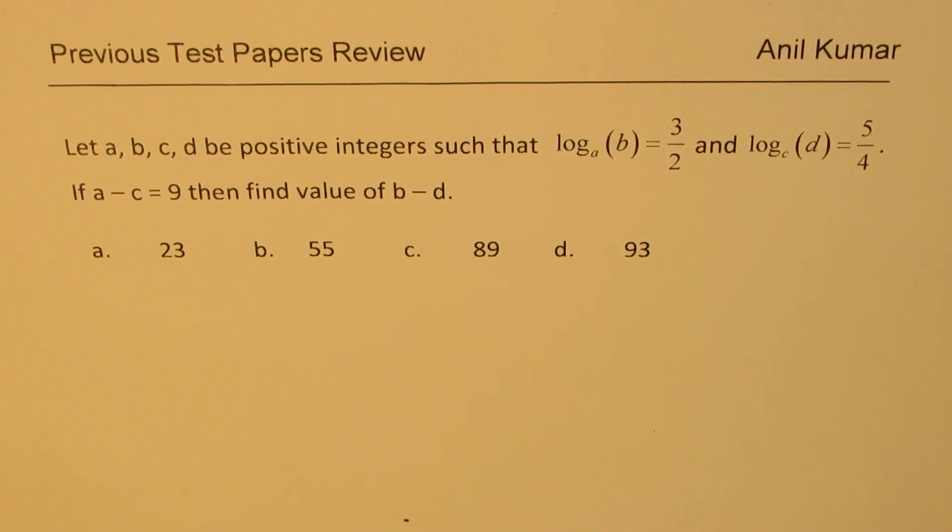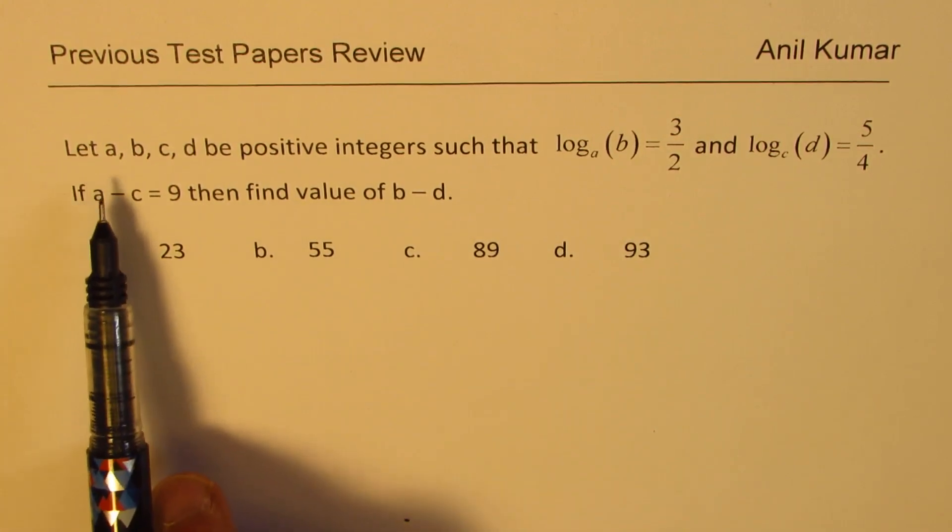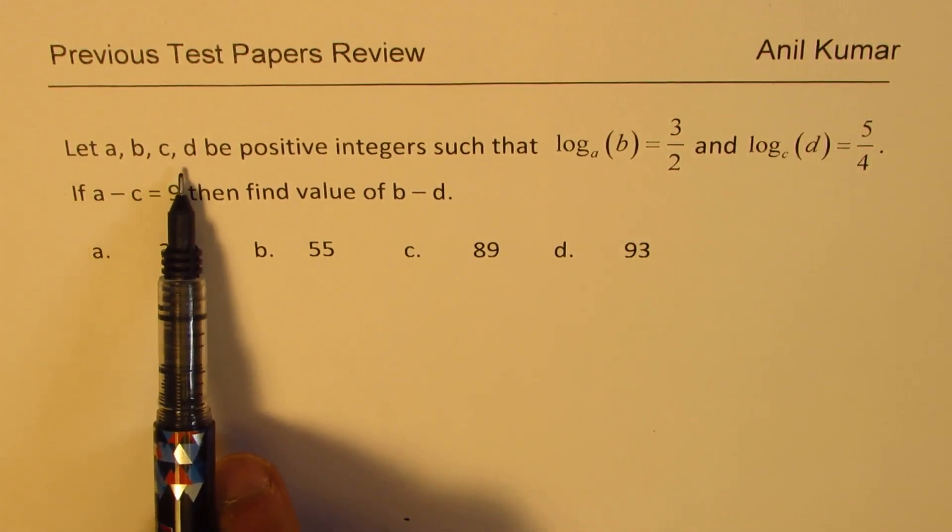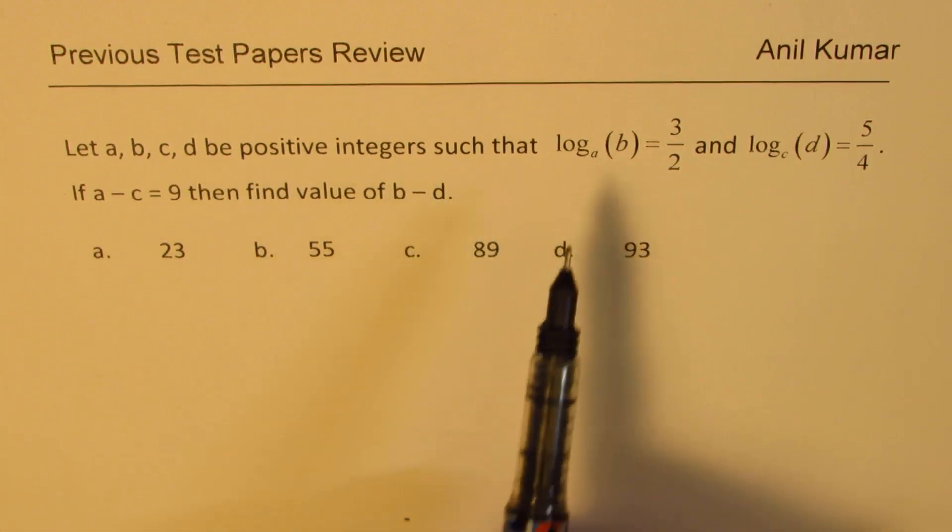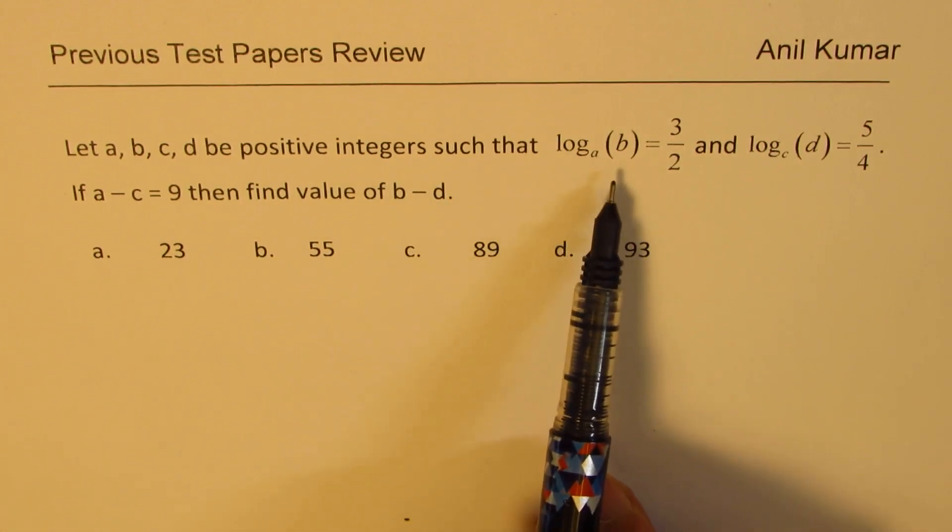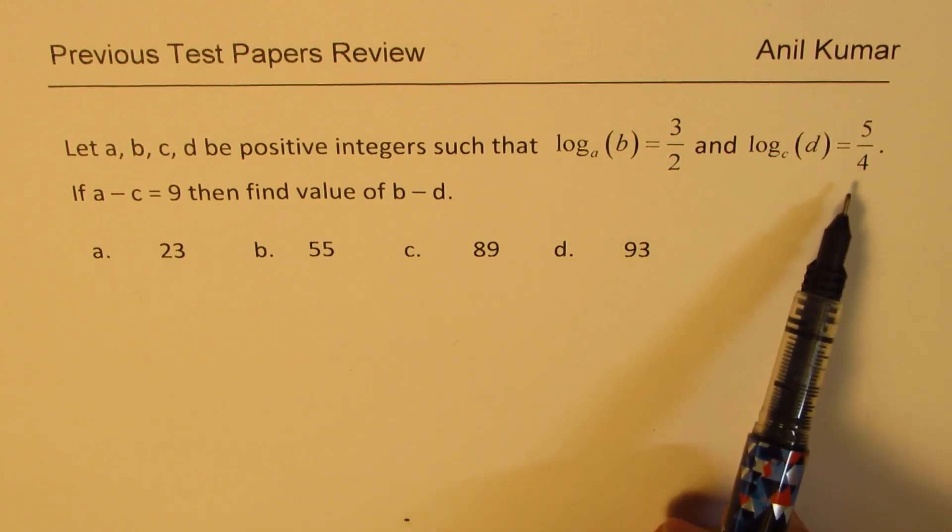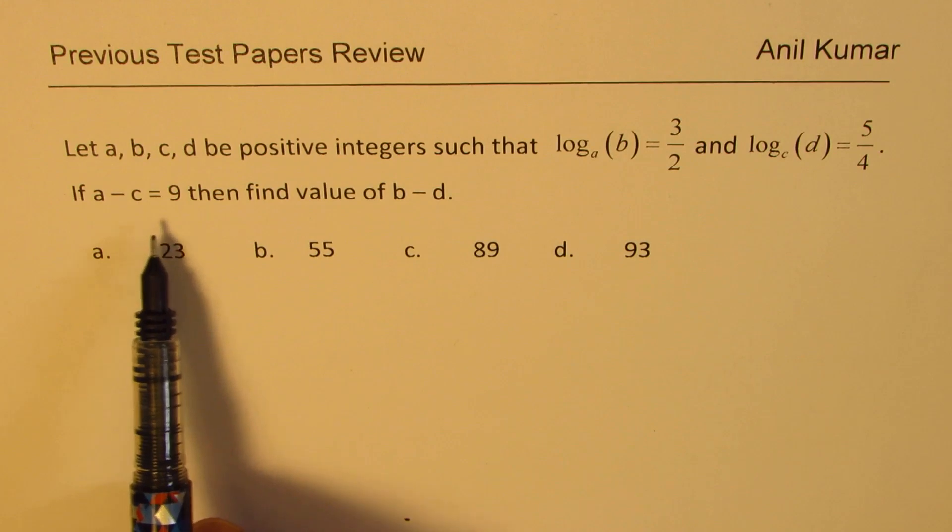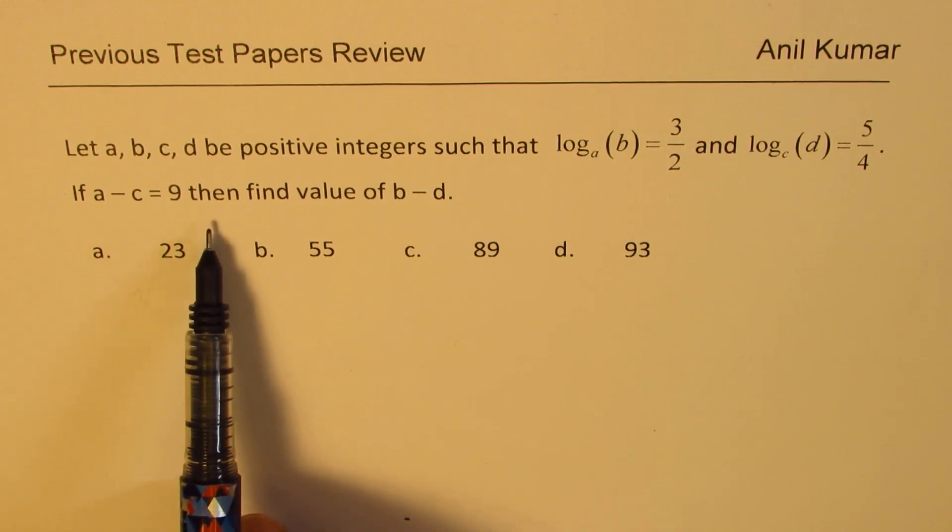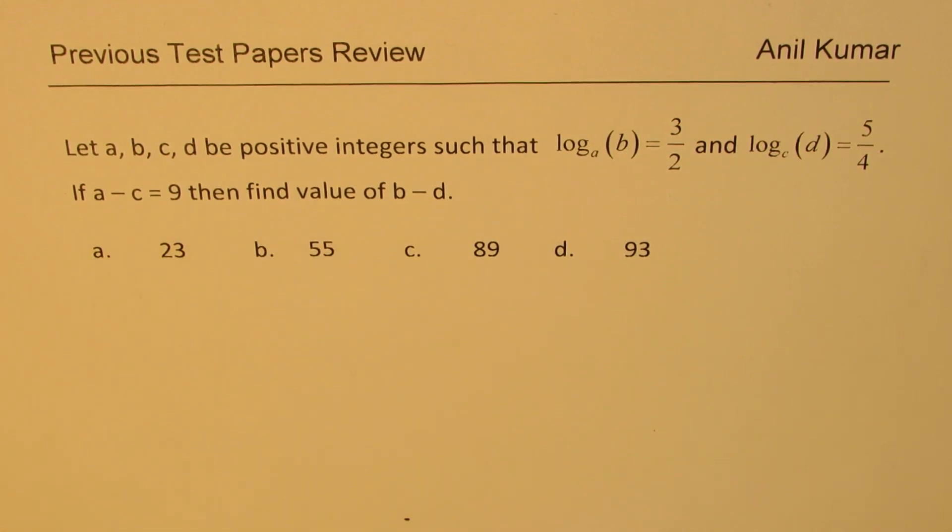Here is a question which is based on logarithms. Let A, B, C and D be positive integers such that log to the base A of B is 3 over 2 and log to the base C of D is 5 over 4. If A minus C is 9 then find the value of B minus D.